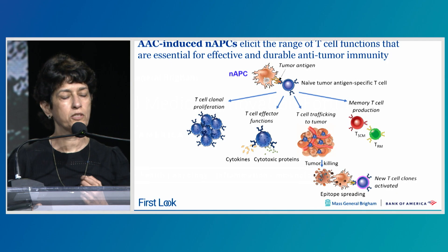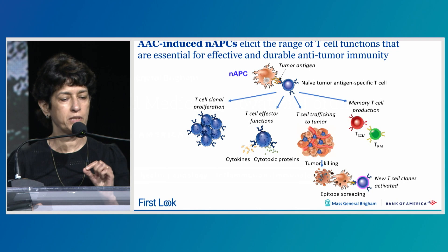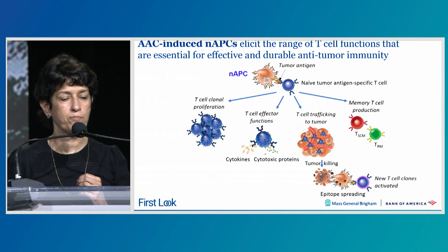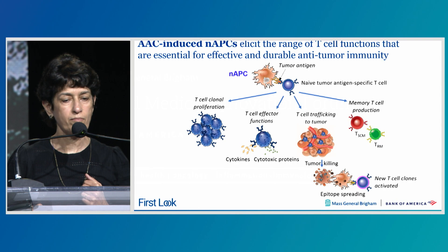AAC-induced neutrophil-derived antigen-presenting cells elicit the full range of T-cell functions required for effective and durable anti-tumor immunity. We have evidence for T-cell clonal proliferation, reflected in the large increase in T-cells within the tumor microenvironment. These T-cells have effector functions and are trafficking to the tumor. We also have evidence for epitope spreading, and NAPCs drive production of memory T-cells critical for durable anti-tumor immunity.